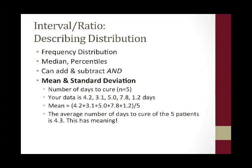For example, if you're looking at number of days to cure — days being interval ratio data — and you have a population of 5, your data includes values of 4.2, 3.1, 5.0, 7.8, and 1.2 days. You can calculate a mean by adding those up and dividing by your population size, and your average number of days to cure for the 5 patients is 4.3.